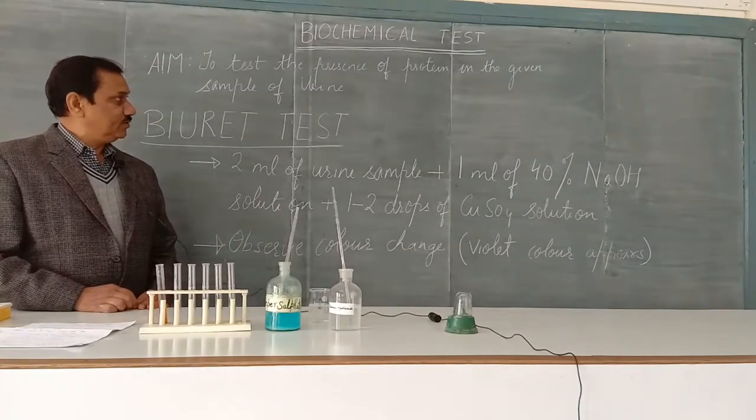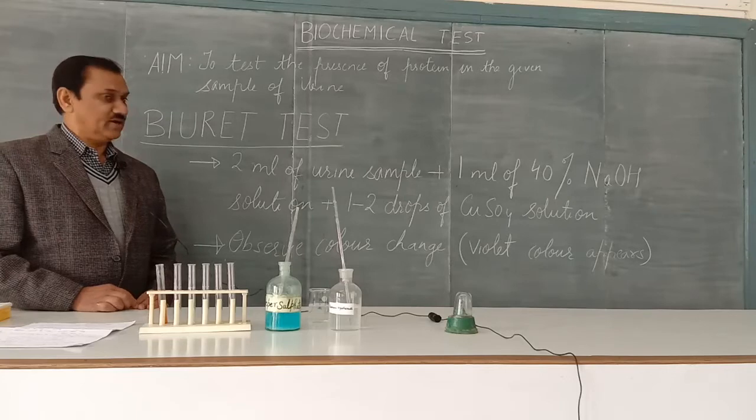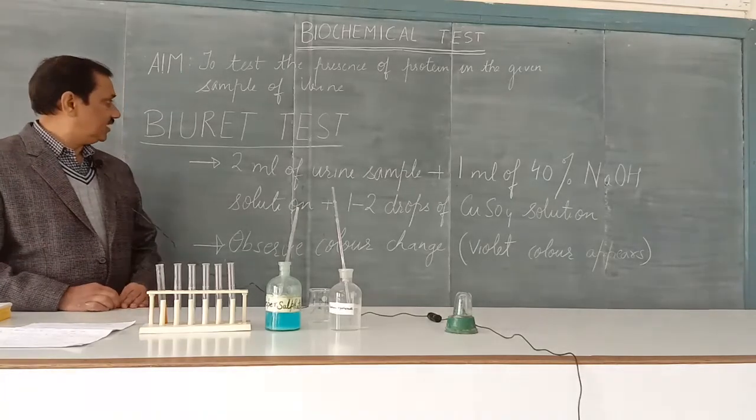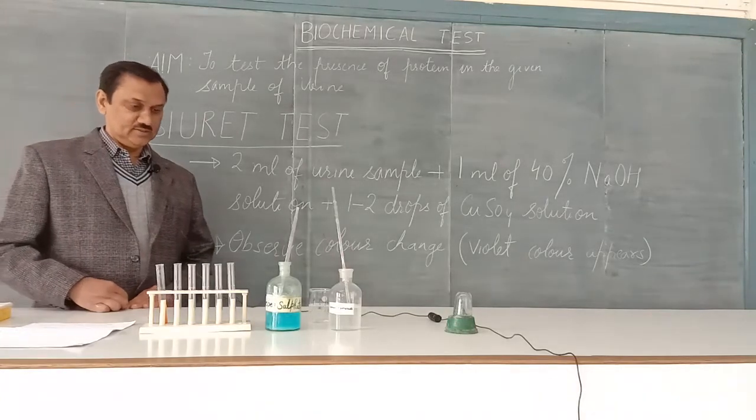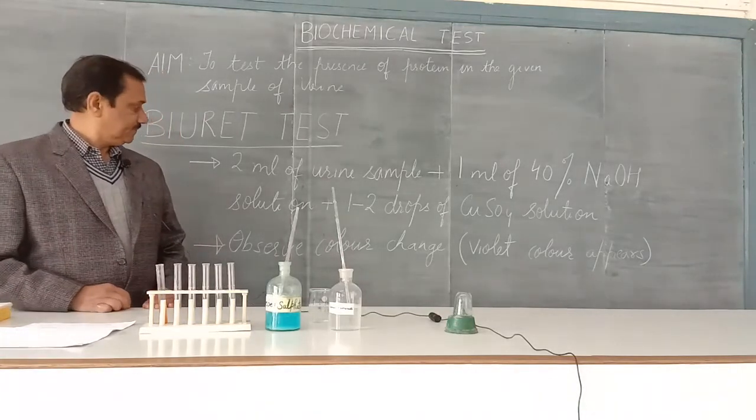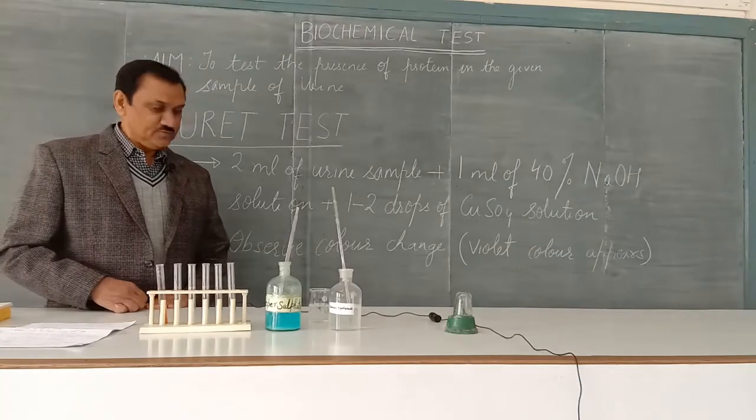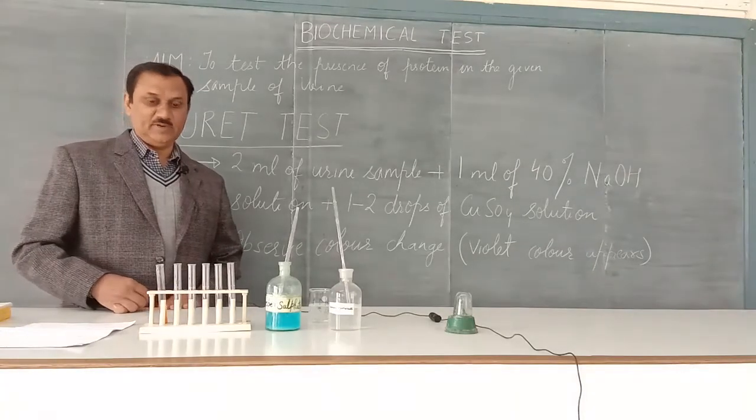The presence of protein in urine can be detected through a biochemical test called the Biuret test. To conduct the Biuret test, we need certain chemicals and apparatus. The things required to conduct this experiment are: